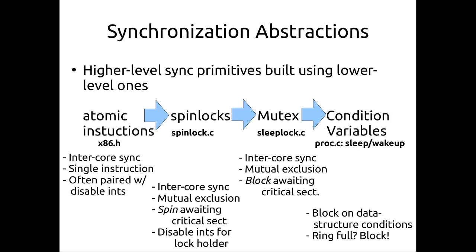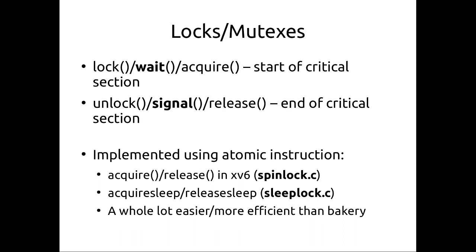Operating systems are about building higher and higher level abstractions that are easier to use while interfacing with raw hardware — but usually trying to hide that raw hardware because it is hard. For locks and mutexes, the operations to take and release them have various names: lock/unlock, acquire/release, take/release. Throughout this talk I'll use lock and unlock. In xv6, acquire and release are in spinlock.c, and for mutexes — which are blocking — it's acquire_sleep and release_sleep in sleeplock. The 'sleep' in the name tells you they're going to block. These are more efficient than the bakery algorithm since they use atomic hardware instructions.